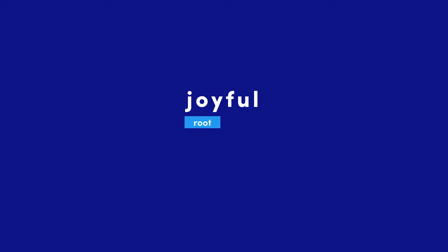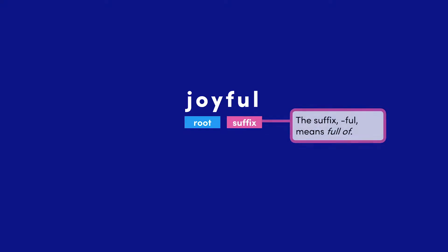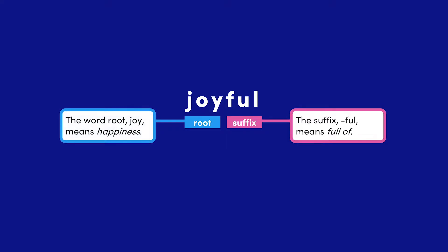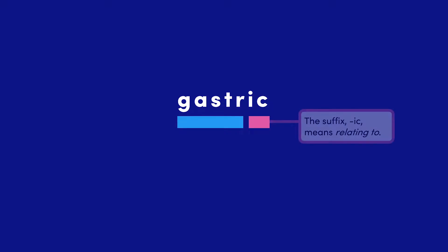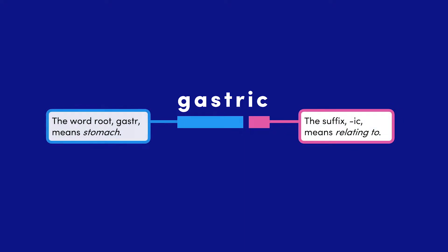Everyday words and medical terms have similarities in structure. For example, 'joyful' has the word root 'joy' and the suffix 'ful.' The suffix 'ful' means full of, and the word root 'joy' means happiness. Now, if we look at the medical term 'gastric,' it has a similar structure. The suffix 'ic' means relating to, and the word root 'gastr' means stomach.